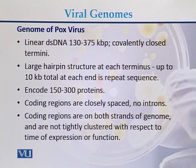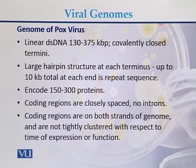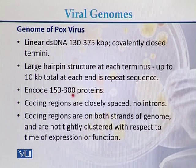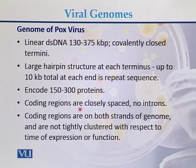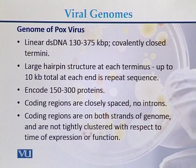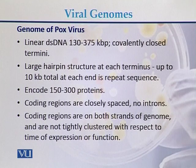The pox virus genome is a linear double-stranded DNA ranging from 130 to 375 kb, with long hairpin structures at each terminus. It encodes 150 to 300 proteins. Coding regions are closely placed with no introns, and genes are present on both strands of the genome.